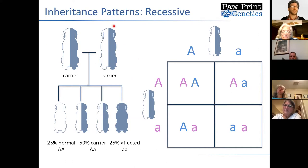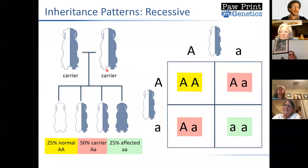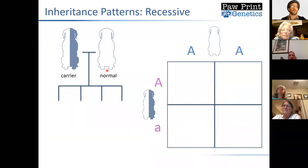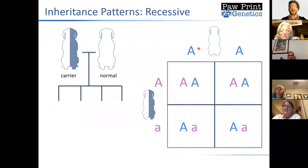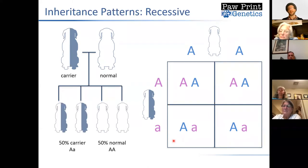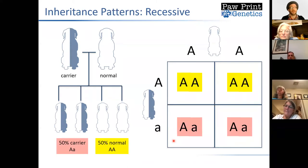This is not an ideal situation. What we would prefer is a situation where we don't get any affected dogs. When we have a carrier dog, the more ideal way to breed them would be to pair the carrier with a normal dog. Using our Punnett square, we'd find that about 50% of the dogs would have a normal genotype, and roughly 50% would be carriers, but we would not expect any of the dogs to actually develop that disease. This is where testing comes in very handy, and with this information you can work to prevent these things from happening.